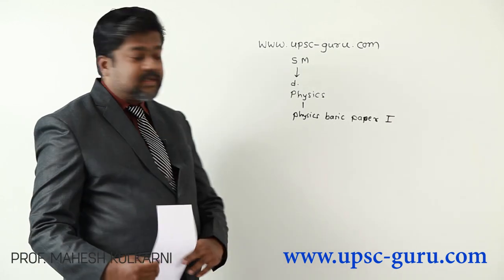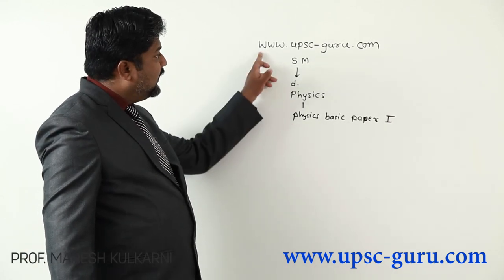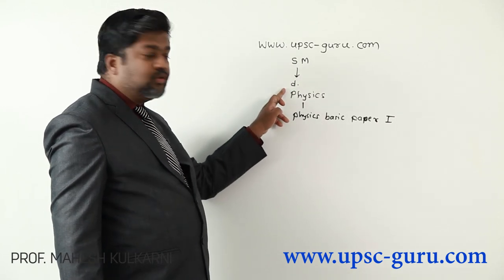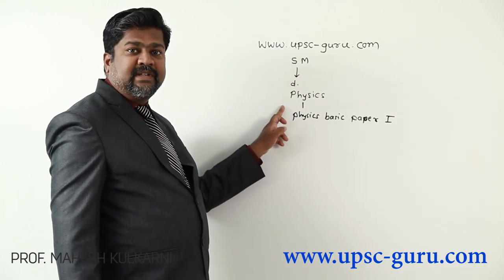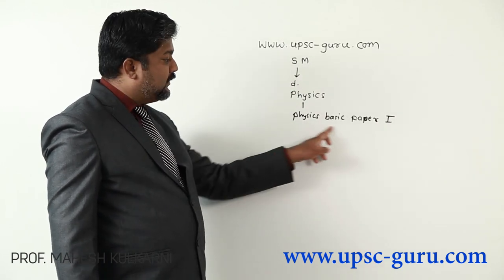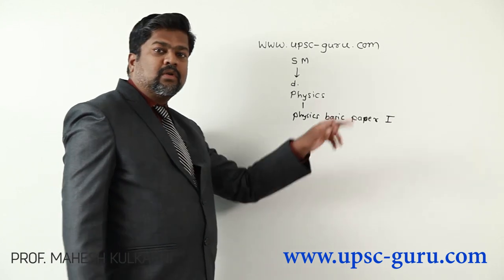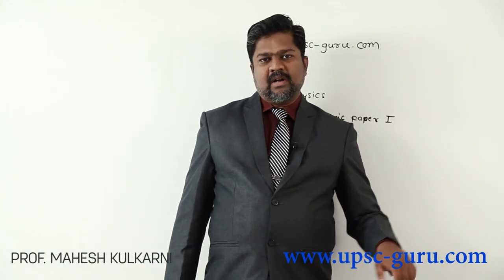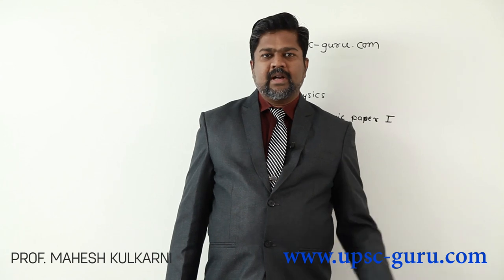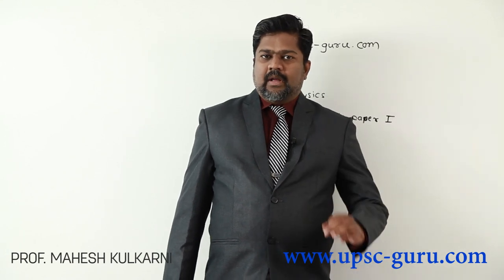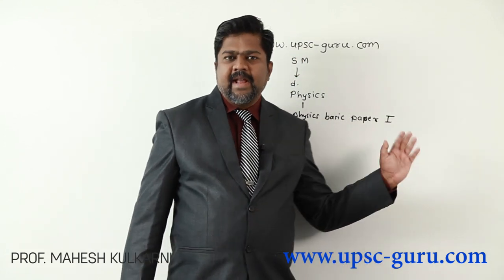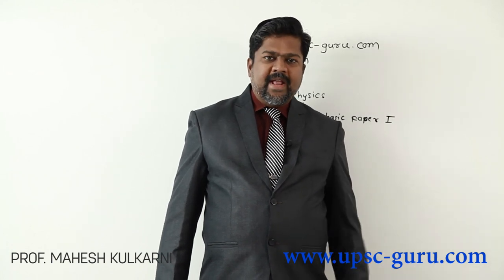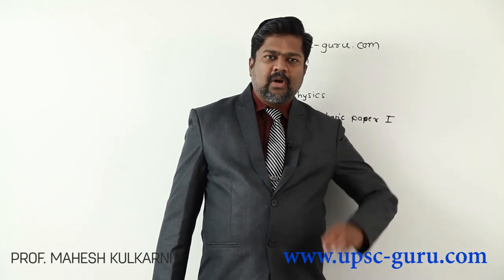So first: visit the website, go to the study material tab, download physics, and under physics you will get Physics Basic Paper 1. Instructions are given to right-click and download. Then take a printout — it is in PDF format in English language.